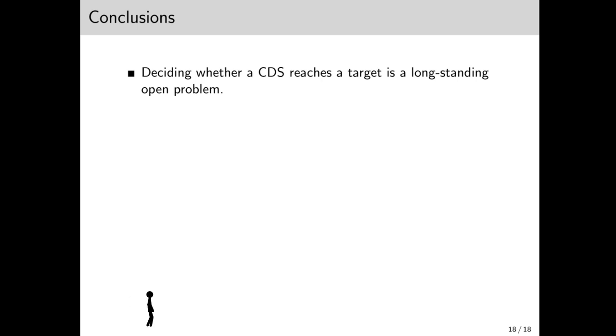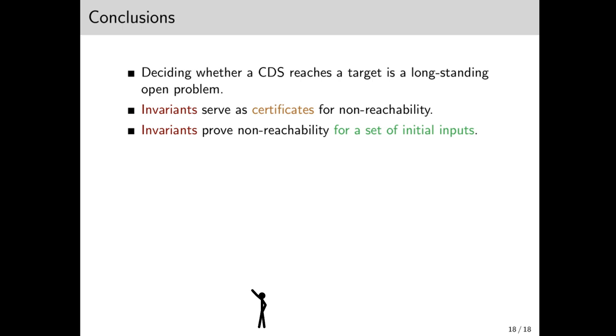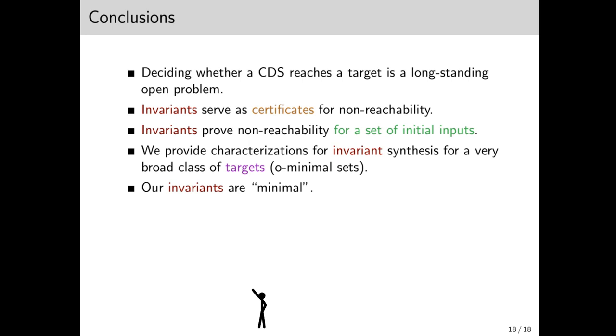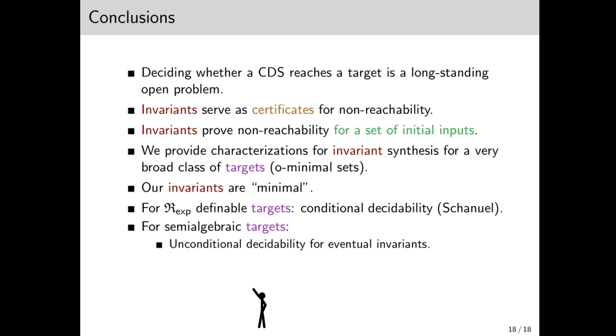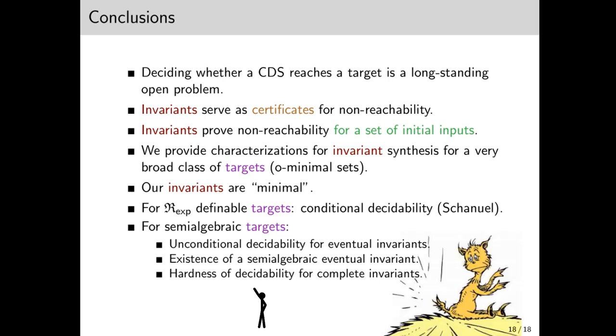Okay, wow, we've been through a lot. Just some concluding remarks. Deciding whether a CDS reaches a target is a long-standing open problem. We can use invariants as certificates of non-reachability. In fact, invariants show non-reachability for a set of initial points, namely anything in the invariant. We provide characterizations for invariant synthesis for O-minimal sets. Our invariants are minimal in that every invariant contains one of them. As for algorithms, for R-exp definable targets, we have Chaniel conditional decidability. And for semi-algebraic targets, we have unconditional decidability for eventual invariants. We show that we can find semi-algebraic eventual invariants, the fat cones, but finding an invariant for the entire orbit is hard. Thanks for listening.